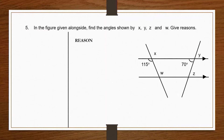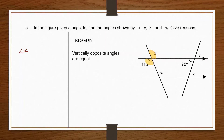Question 5: in the figure given alongside, find the angles shown by X, Y, Z and W. Starting with angle X — looking at the angle directly opposite, which is 150 degrees, angle X and 150 are vertically opposite angles. Vertically opposite angles are equal, therefore angle X is equal to 150 degrees.